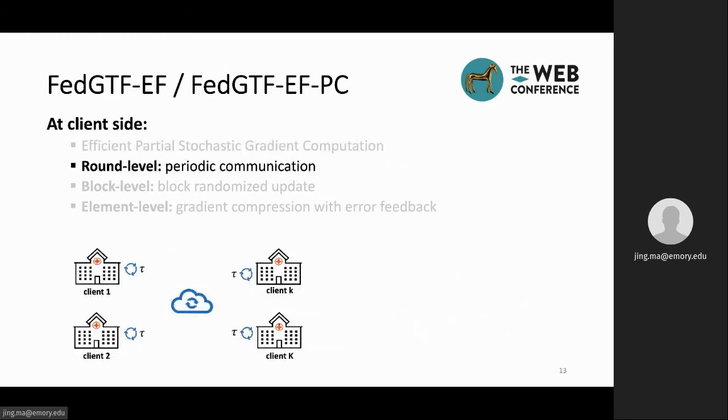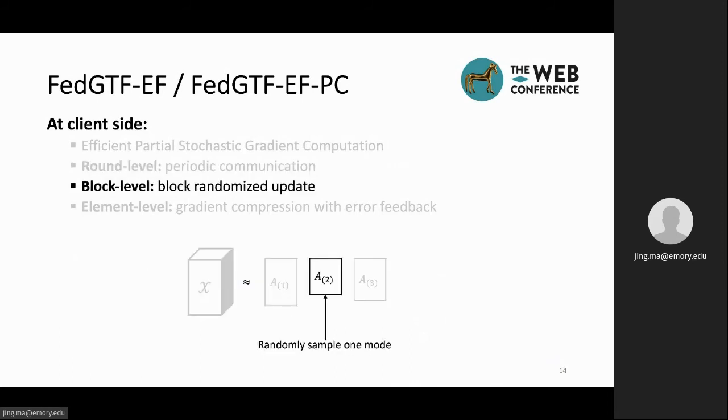So when the algorithm starts at the client side, we can choose to adopt periodic communication strategy at round level to reduce the communication frequency, which means that each client will execute more than one round of local updates before communicating to the server. At the same time, we also adopt the block randomized update at the block level. At every iteration, we will just randomly sample one mode of the factors to update.